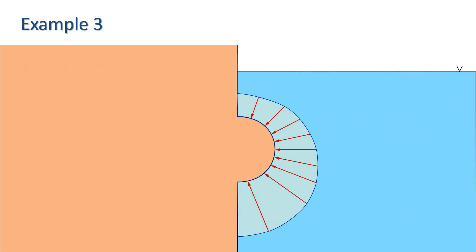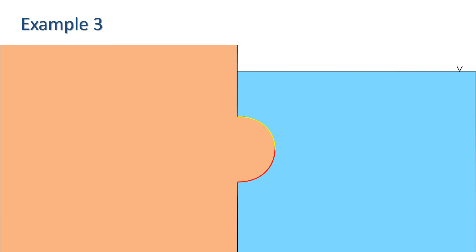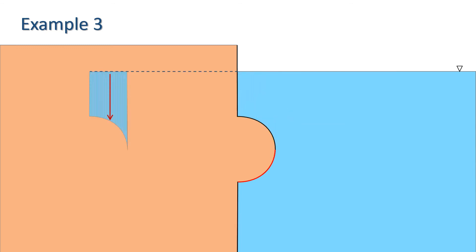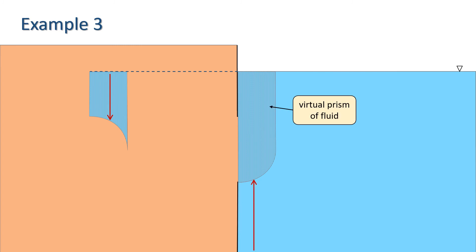If we remind ourselves of what the pressure distribution looks like, we can see that the pressure on the upper part of the surface has vertical components of pressure acting downward, while the lower part has vertical components of pressure acting upwards. Thus for the vertical component of force, we need to break our surface down into two parts: that with fluid above it, and that with fluid below it, shown in yellow and red respectively here. If we consider first the yellow part with fluid above it, we have a real prism of fluid above it resulting in a downward thrust equal to the weight of the fluid in the prism. For the part of the curve with fluid below it — the red part — we have a virtual prism of water resulting in an up thrust with magnitude equal to the weight of fluid in the virtual prism. To calculate the resultant thrust, we simply add these two forces together.